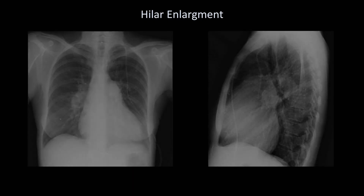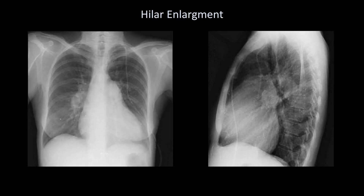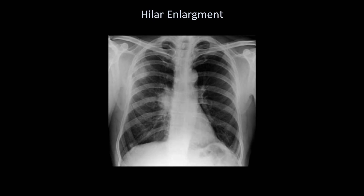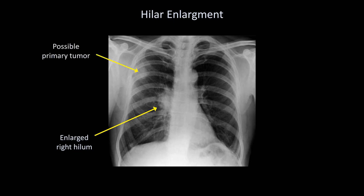Here is another example of hilar enlargement — in this case, the patient had severe pulmonary hypertension. In this next case, there is unilateral right-sided enlargement, unfortunately associated with an opacity in the right upper lung that looks suspicious for a primary tumor. Overall, the most likely diagnosis here is a primary lung cancer with a hilar node metastasis.